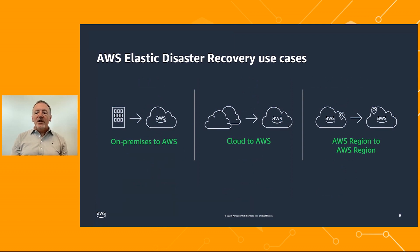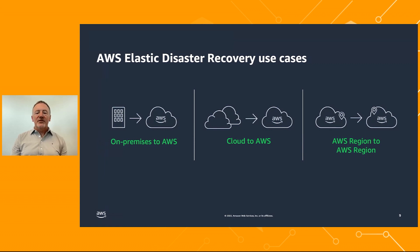You can quickly recover your on-premises and cloud-based applications using AWS DRS. DRS reduces costs by removing idle recovery site resources, and you pay for your fully provisioned disaster recovery site on AWS only when you need it for recovery drills. For AWS-based applications, you can use AWS DRS to recover applications in another AWS region, which can help you meet resilience and availability goals for these applications.